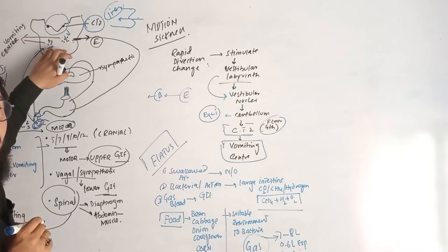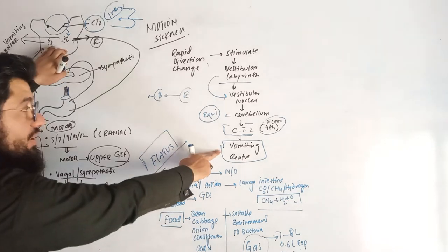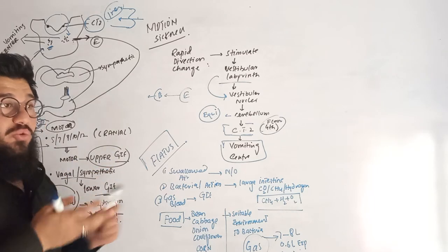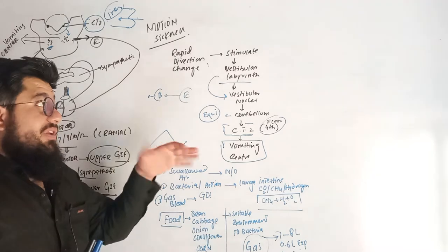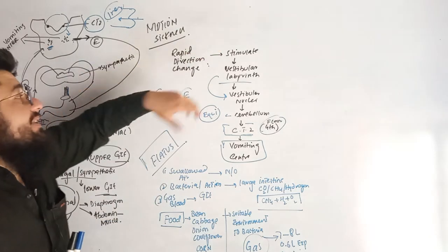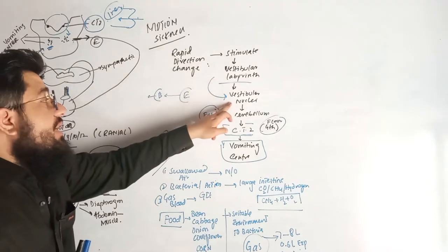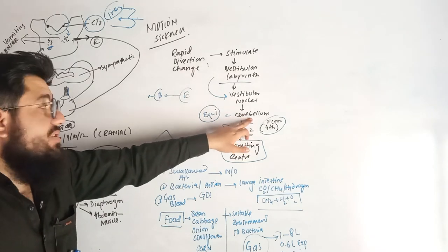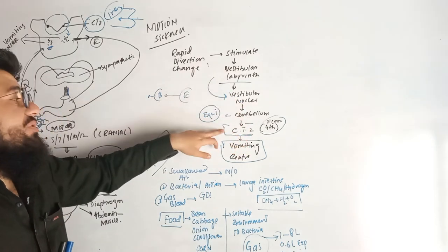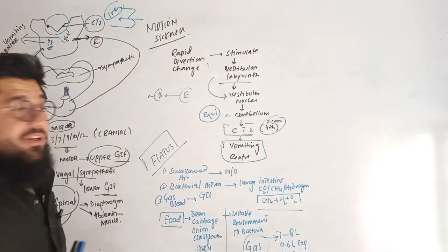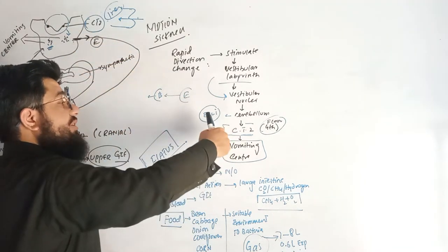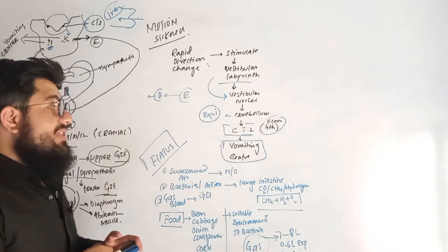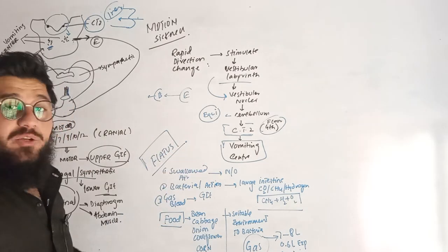That signal is then forwarded to the vomiting center, which is located a little bit further down. The vomiting center consists of several nuclei together. So, because of rapidly changing directions, your vestibular labyrinth is stimulated, which sends a signal to the vestibular nuclei, then to the cerebellum, then to the CTZ. When the CTZ is stimulated, it sends a signal to the vomiting center to initiate vomiting.